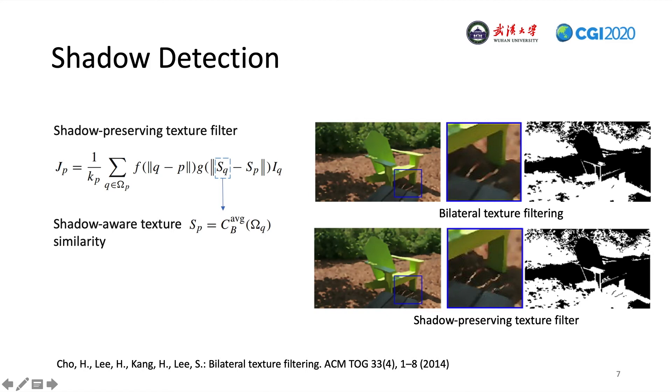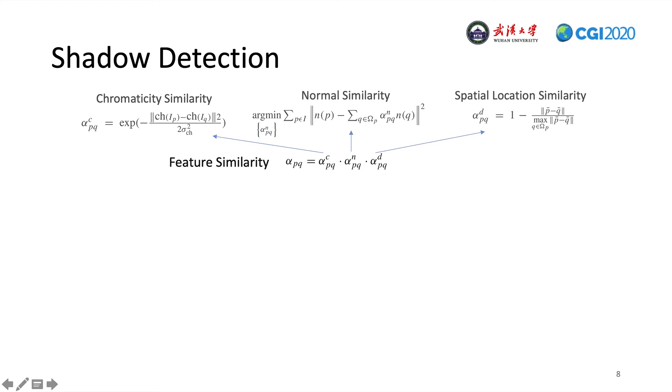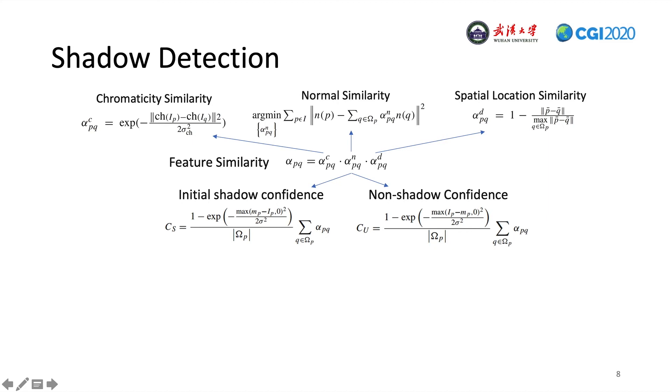To calculate the shadow confidence, we first calculate the feature similarity, which includes three parts: chromaticity similarity, normal similarity, and spatial location similarity. Then, we can obtain the initial shadow confidence and non-shadow confidence with the feature similarity. The visual maps are shown here.